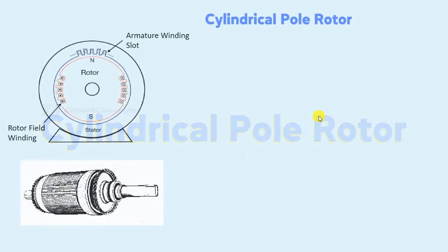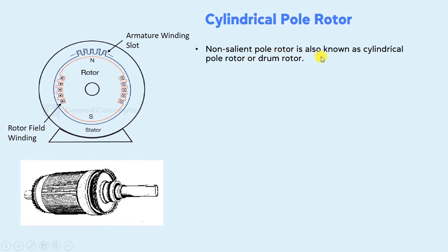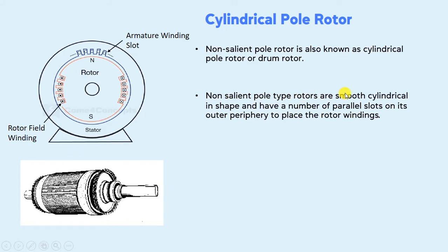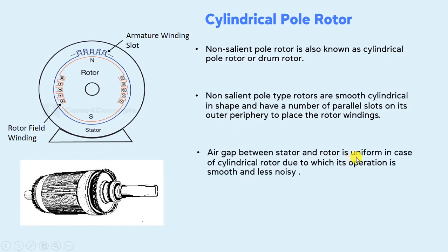Now moving on to the next part, which is the cylindrical pole rotor. Non-salient pole rotor is also known as cylindrical pole rotor or drum rotor. Non-salient pole type rotors are smooth and cylindrical in shape, and have a number of parallel slots on their outer periphery to house the rotor windings. Here you can see in the cross-sectional view of the cylindrical pole rotor — it is cylindrical in shape and these are the parallel slots on the outer periphery in which the rotor windings are placed. The air gap between the stator and rotor is uniform in the case of a cylindrical rotor, and you can also see that the air gap is uniform.